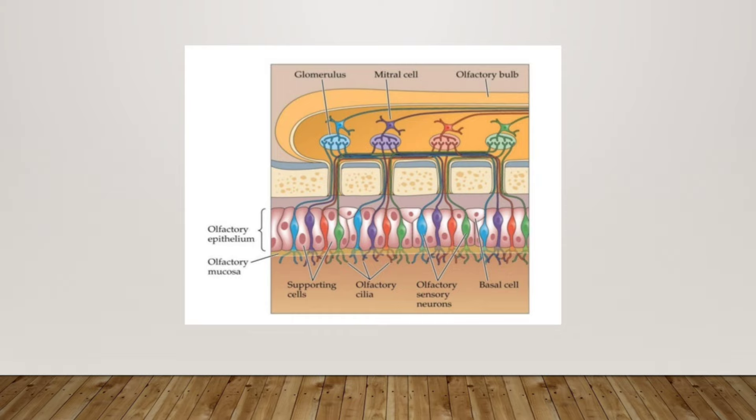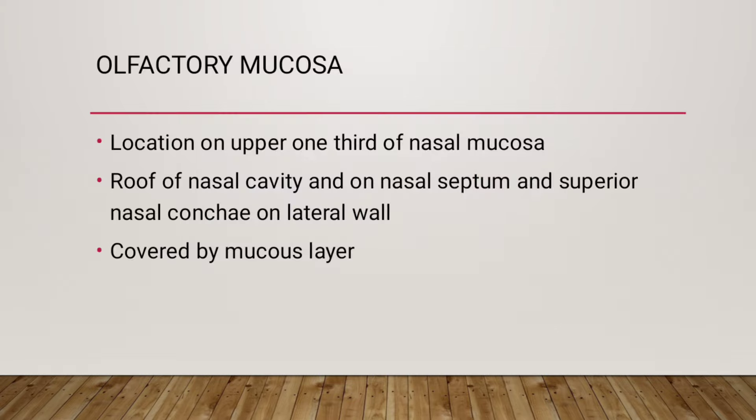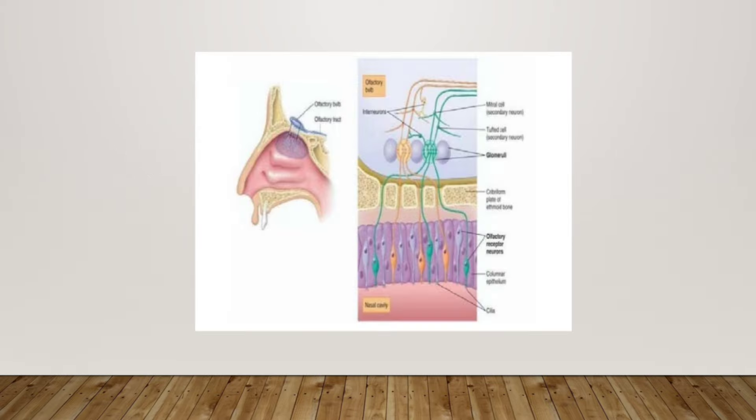The olfactory mucosa is located on the upper one-third of the nasal mucosa. It is found on the roof of the nasal cavity, the nasal septum, and the superior nasal concha on the lateral wall. It is covered by a mucus layer.